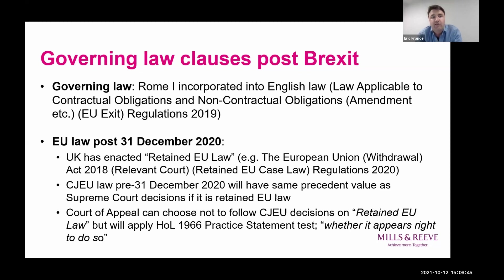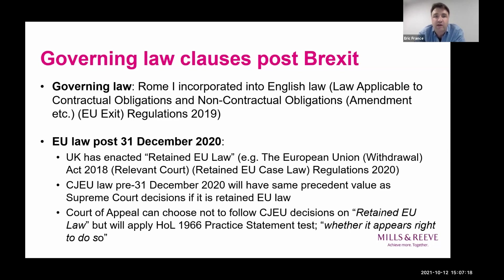The EU Withdrawal Act states that historic Court of Justice of the European Union (CJEU) case law will have the same precedent status as decisions of the UK Supreme Court. So UK courts will interpret EU-derived law by reference to the CJEU's case law as it stood at the point of Brexit. But going forward, the CJEU no longer has direct jurisdiction in the UK, meaning we could well see a divergence in approach between the CJEU and UK courts. It's still likely that UK courts will have regard to CJEU decisions when applying EU law principles.